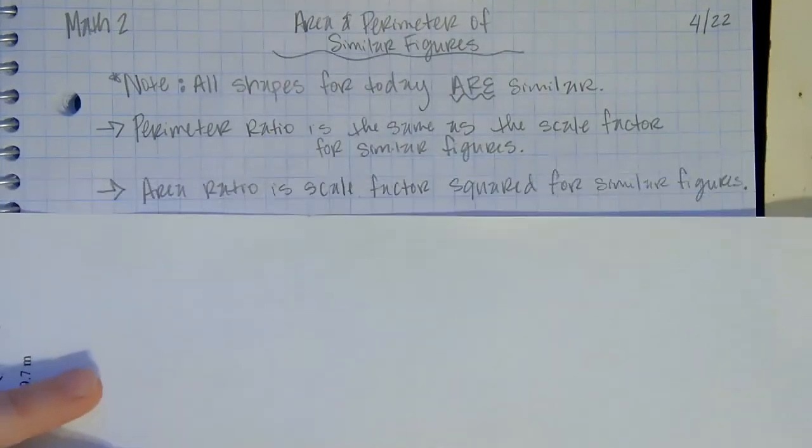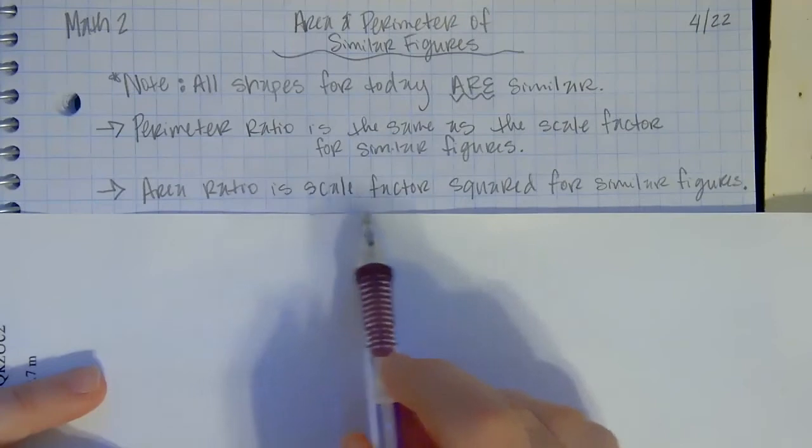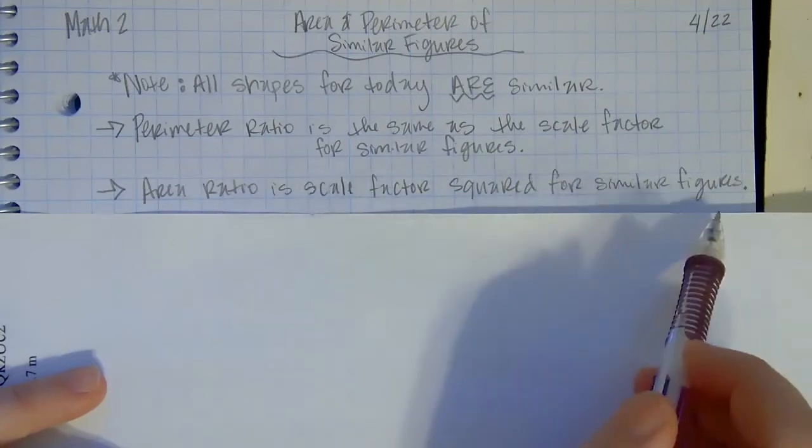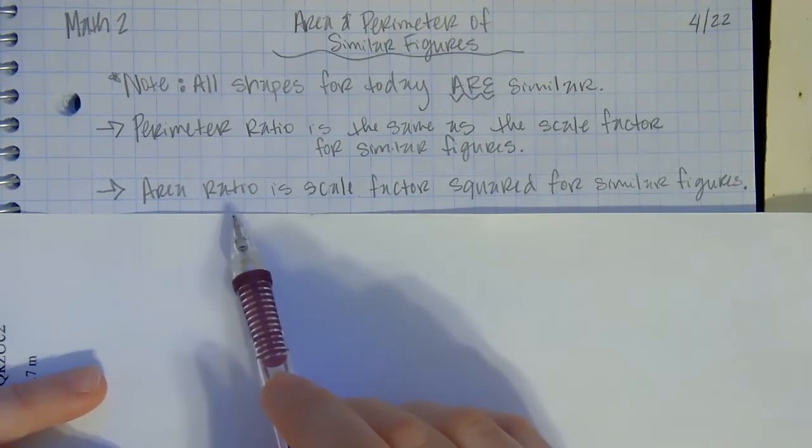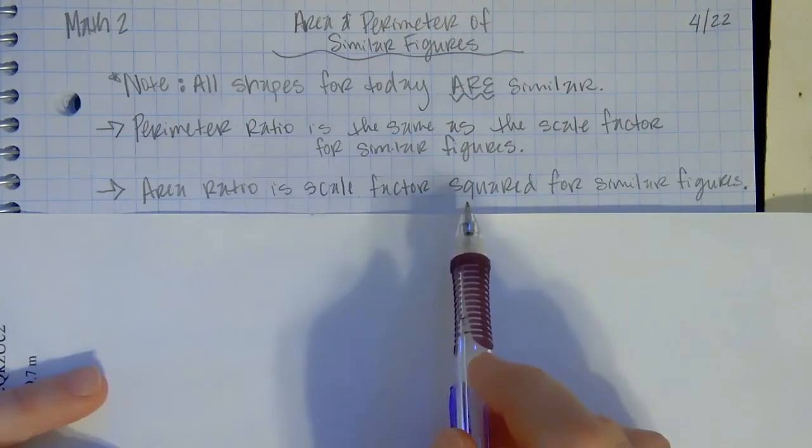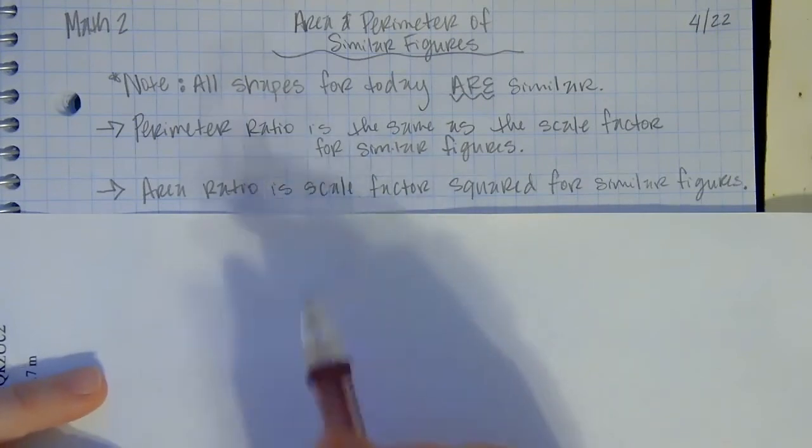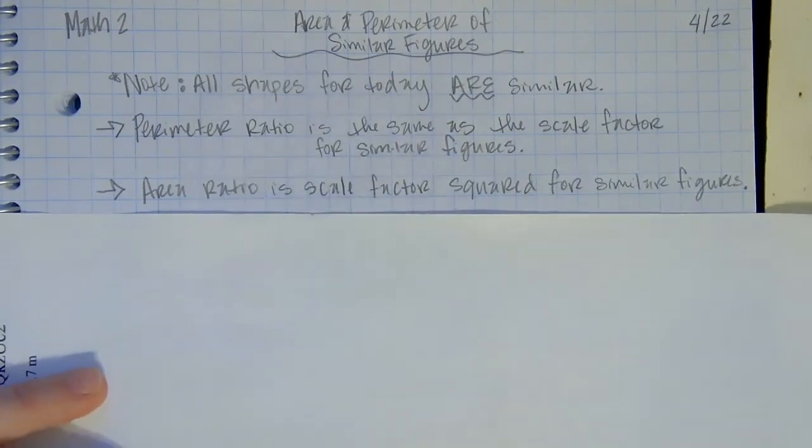And then for area, the area ratio is the scale factor squared for similar figures. So for example, if the scale factor is twice as big, then the area is going to be four times as big because two squared is four. So we're going to use that to help us here.